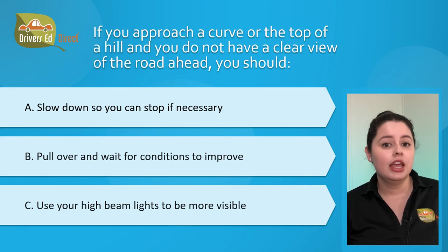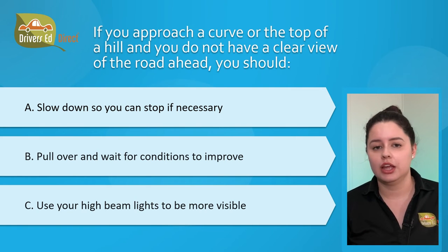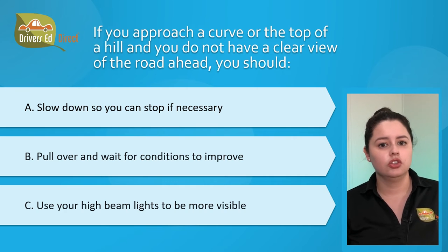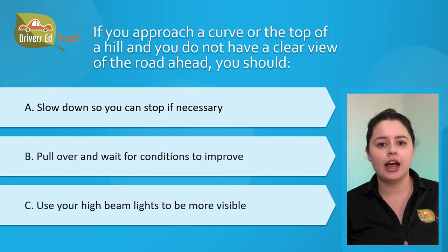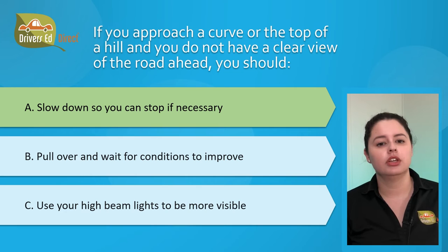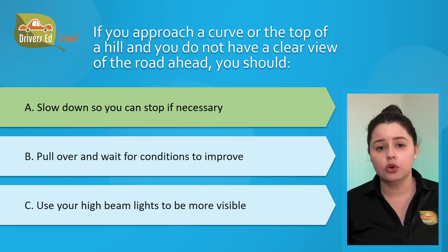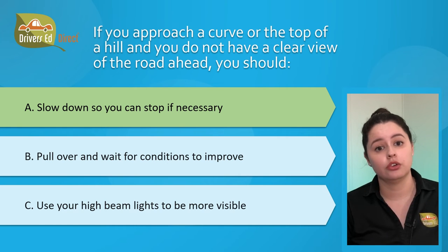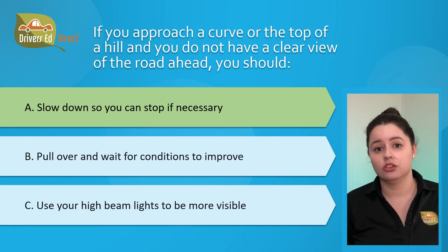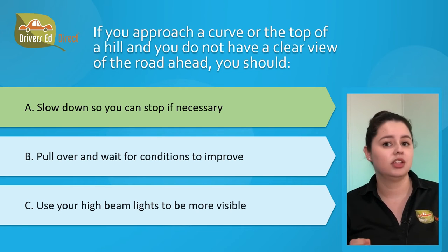Question number thirteen: if you approach a curve or the top of a hill and you do not have a clear view of the road ahead, you should: A) slow down so you can stop if necessary, B) pull over and wait for conditions to improve, or C) use your high beam lights to be more visible. The correct answer is A, slow down so you can stop if necessary. Anytime your view is blocked by a hill or curve, assume there's another vehicle ahead and slow down enough to come to a safe stop.